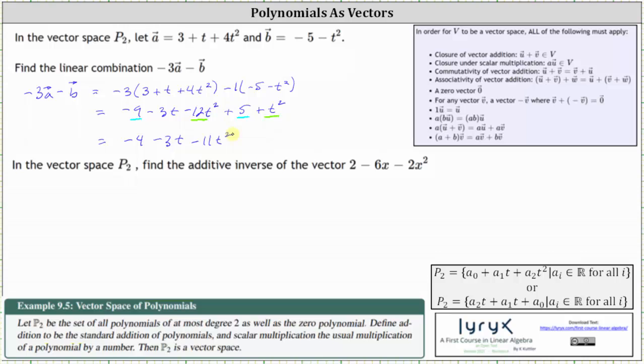And then for the second part, in the vector space P2, find the additive inverse of the vector 2 - 6x - 2x².